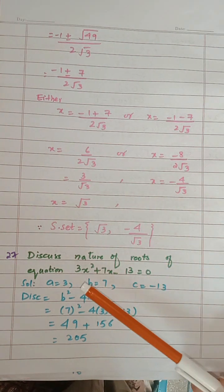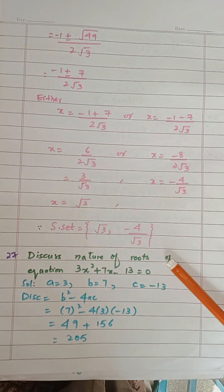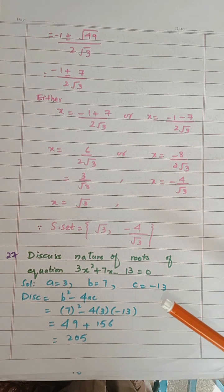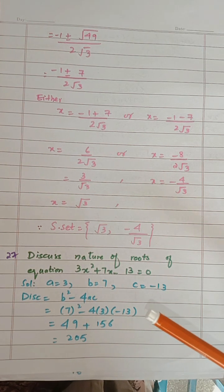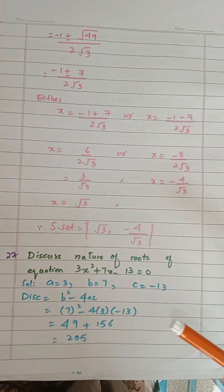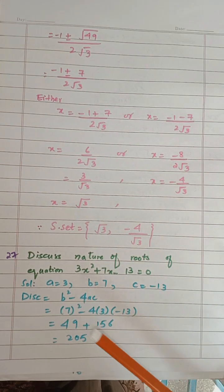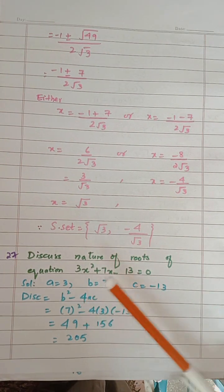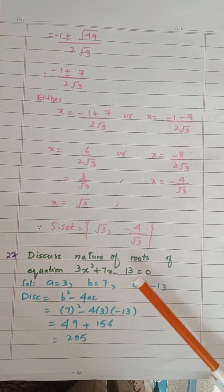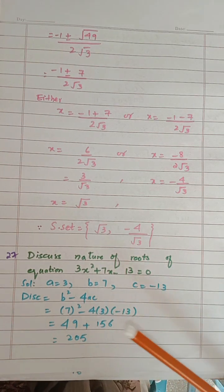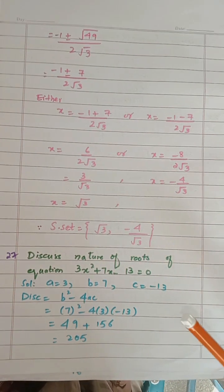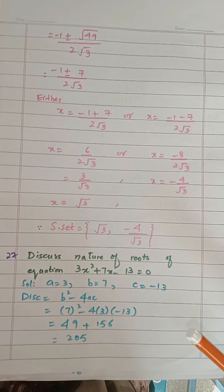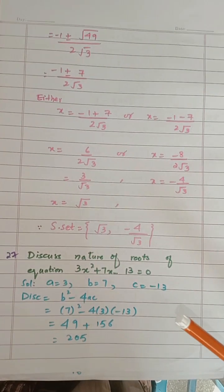Next, discuss the nature of the roots. You have to tell the nature of the roots — whether they are rational or irrational, and equal or unequal. For this, you have to find: A is 3, B is 7, C is minus 13. Write the formula: discriminant is equal to B squared minus 4AC.